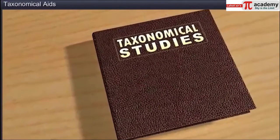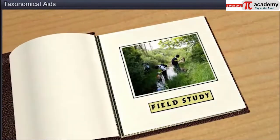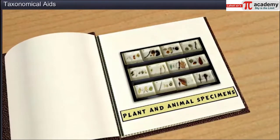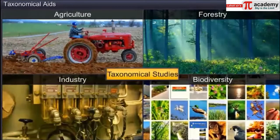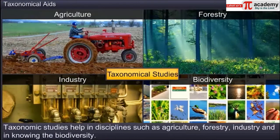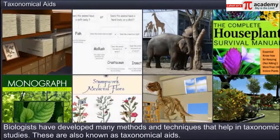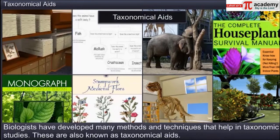Taxonomic studies require careful identification of the organisms, for which intensive laboratory and field studies are carried out and actual specimens of plant and animal species are collected. These studies help in disciplines such as Agriculture, Forestry, Industry and in knowing the biodiversity. Over the years, biologists have developed many methods and techniques that help in taxonomic studies. These are also known as taxonomical aids.